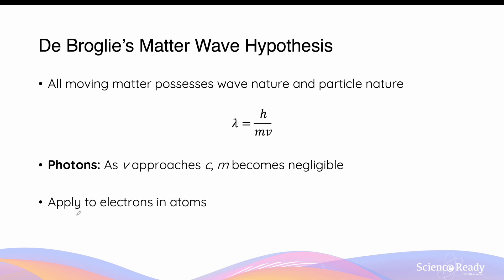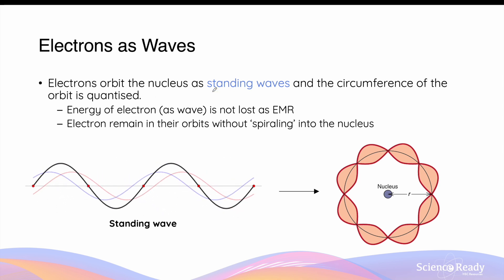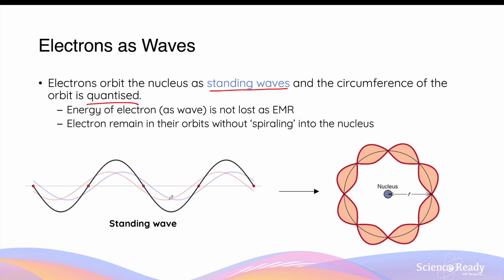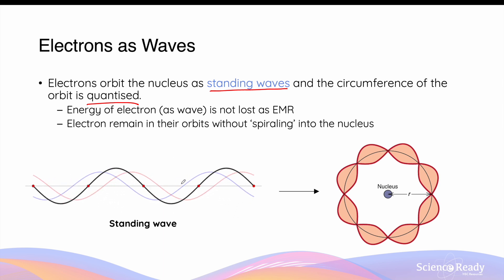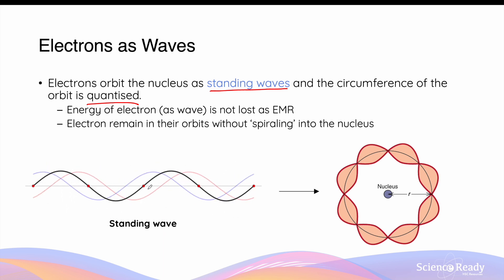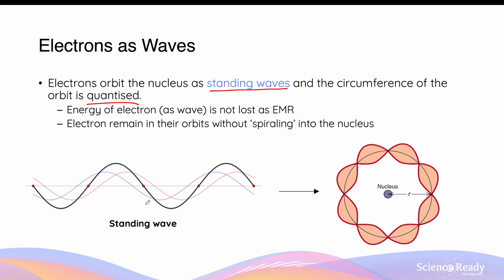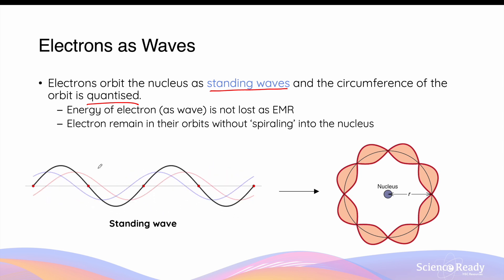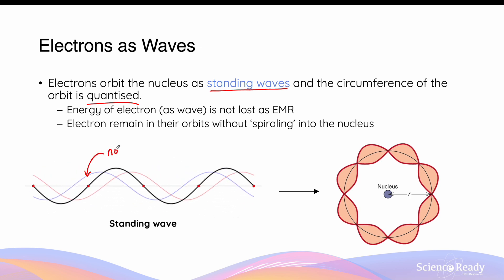When de Broglie made this hypothesis regarding matter-wave duality, he also applied the concept of matter waves to the electrons in atoms, and this will be the focus of this video. De Broglie stated that electrons orbit the nucleus as standing waves, and that the circumference of the electronic orbits is quantized. A standing wave is formed when two waves of equal amplitude and frequency propagate in opposite directions, shown by the blue and red waves. They interfere to produce a wave that only oscillates on the spot, shown by the black standing wave. The position at which there is no oscillation is known as the nodes of the standing wave.